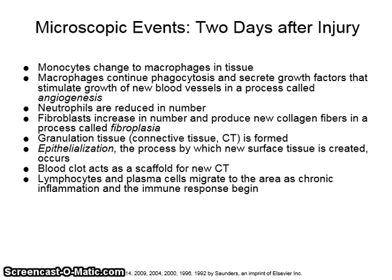Two days after the injury, monocytes change to macrophages in tissue. Macrophages continue phagocytosis and secrete growth factors that stimulate growth of new blood vessels in a process called angiogenesis. Neutrophils are then reduced in number. Fibroblasts increase in number and produce new collagen fibers in a process called fibroplasia. Granulation tissue — connective tissue — is formed. Epithelialization, the process by which new surface tissue is created, occurs. The blood clot acts as a scaffold for new connective tissue. Lymphocytes and plasma cells migrate to the area as chronic inflammation and the immune response begins.